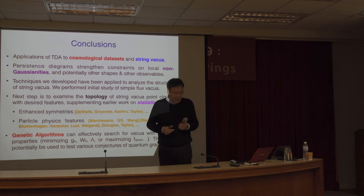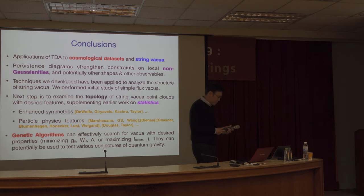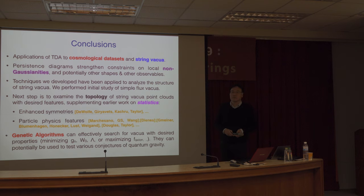In summary, we have seen a remarkable convergence of ideas. Topological data analysis can significantly improve constraints on primordial non-Gaussianity, and similar tools can analyze the structure of the string landscape. Genetic algorithms combined with topological analysis have significantly improved the speed of searching for optimal solutions in the landscape. Thank you.